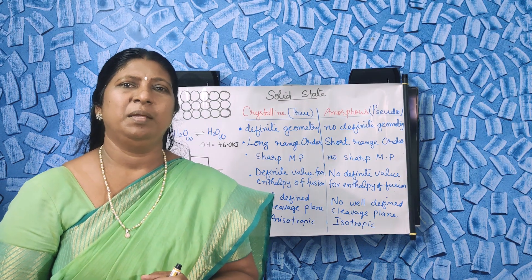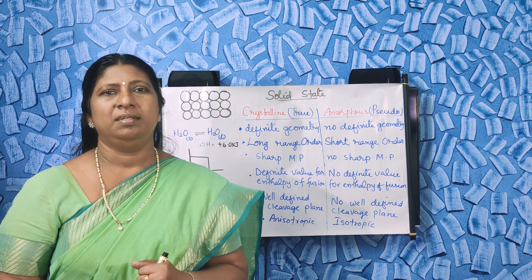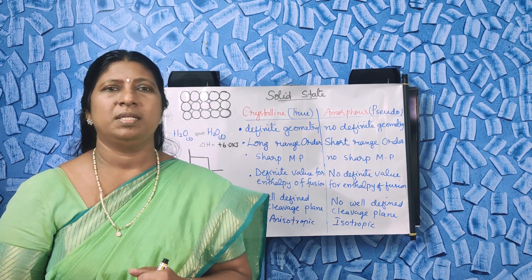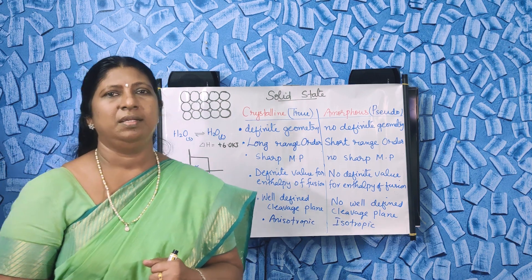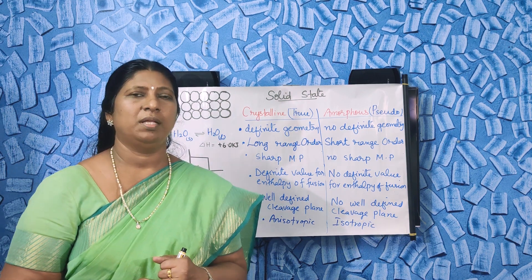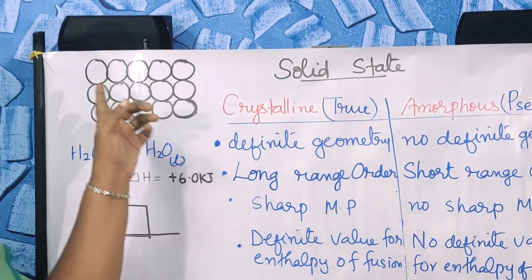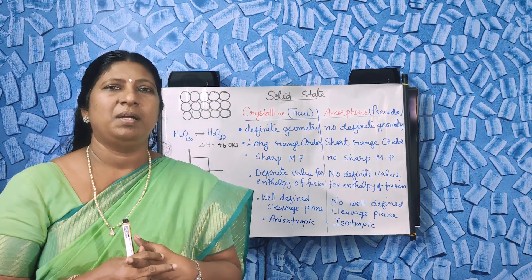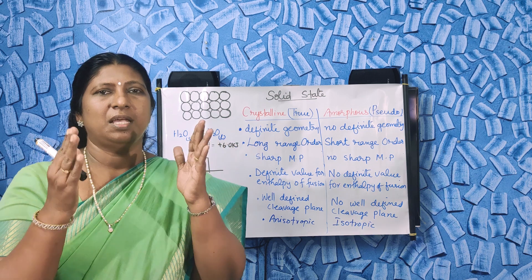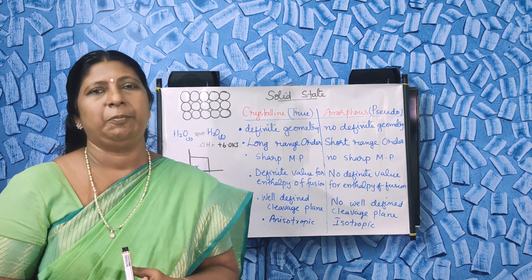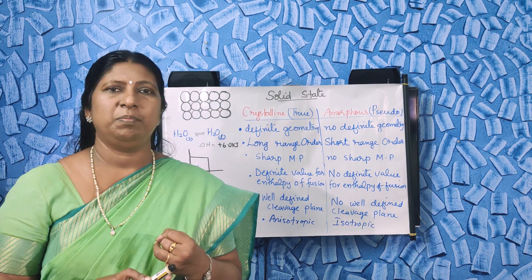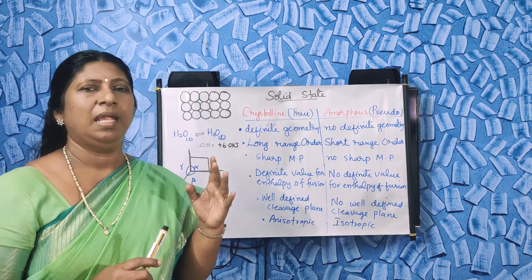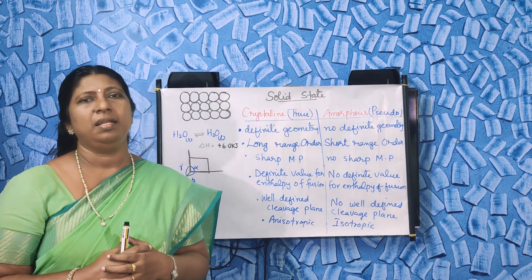What are the important characteristics of a solid? In solids, the particles are closely packed. There is less intermolecular space between the particles. The force of attraction between the particles is very high. As the particles are close together, the binding force is very high. They have definite shape, definite volume, definite mass.